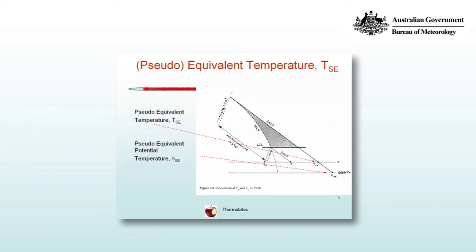If you lower the parcel further to a thousand hectopascals, you'll obtain the pseudo-equivalent potential temperature, θSE. And like the wet bulb potential temperature, this is a conserved quantity for saturated adiabatic processes.